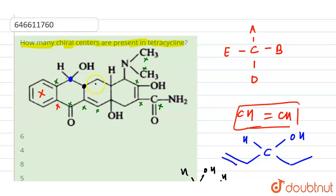This next carbon will not be a chiral carbon because two of its substituents are the same — there is a hydrogen here and also a hydrogen on the other side, giving two identical substituents.